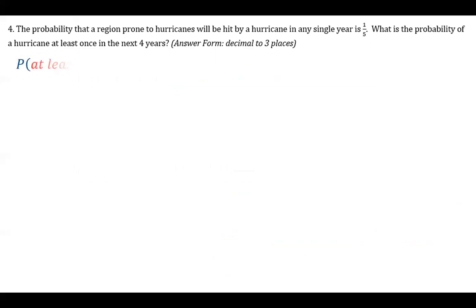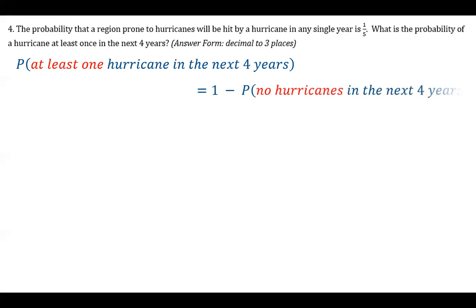Number four says the probability that a region prone to hurricanes will be hit by a hurricane in any single year is one out of five. What is the probability of a hurricane at least once in the next four years? So we want the probability that there will be at least one hurricane in the next four years. Since we're doing at least one, I'm going to use the complement rule: one minus the probability that there are no hurricanes in the next four years.